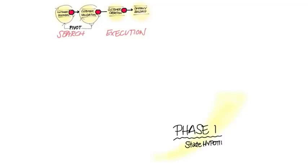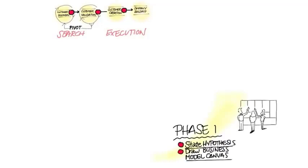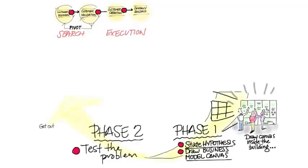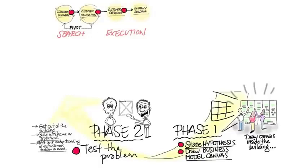Let's take a look at the first step in customer discovery. You're going to be living this for the next couple of weeks if you're doing this for real. Phase one is you state your hypotheses and you draw the business model canvas. And again, you put the canvas on the wall, you and your team get around and put up yellow stickies. But the next step is you get out of the building. You're going to test the problem. You're going to test your understanding of the customer's problem or need, and you're going to figure out how to build the prototype.